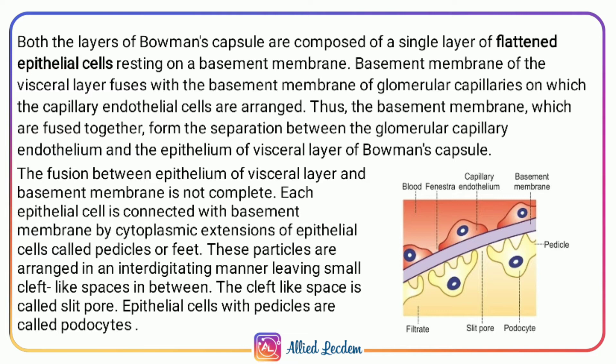The visceral layer basement membrane fuses with the glomerular capillaries' basement membrane, on which the capillary endothelial cells are arranged. The fused basement membrane forms the separation between the glomerular capillary endothelium and the epithelium of the visceral layer of Bowman's capsule. The fusion between the epithelium of the visceral layer and the basement membrane is not complete.